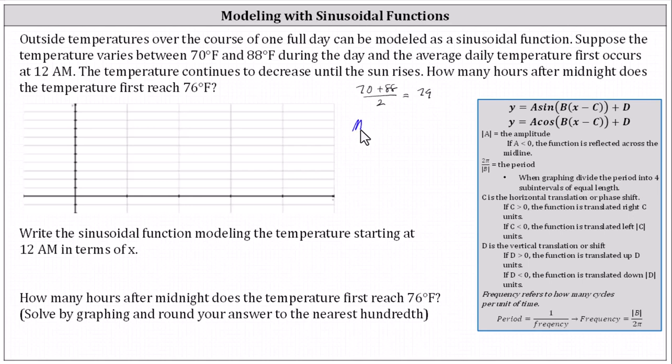So we know the midline is going to be y equals 79, which means the graph of the sinusoidal function has been shifted up 79 units and therefore d equals 79. Let's record this below and now we'll let x equal the number of hours after 12 a.m., and because the model is for one full day we know the period is equal to 24 hours.